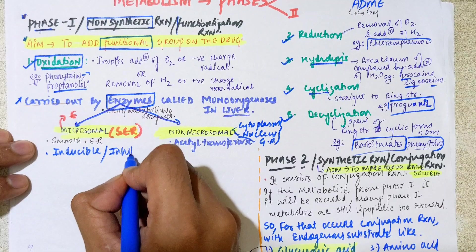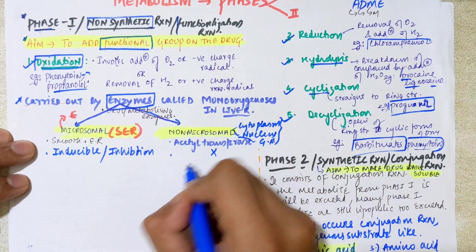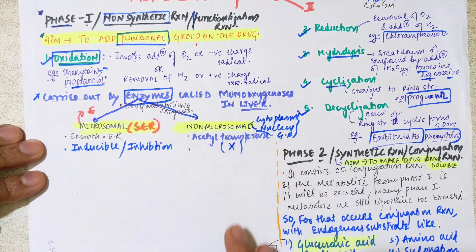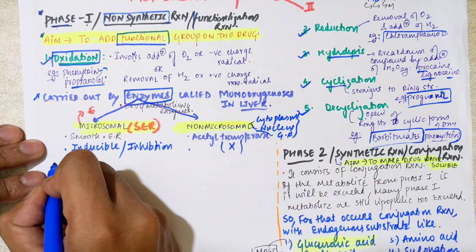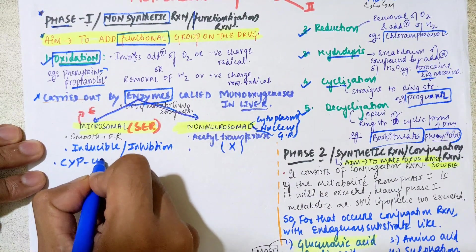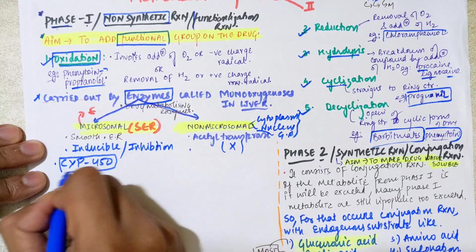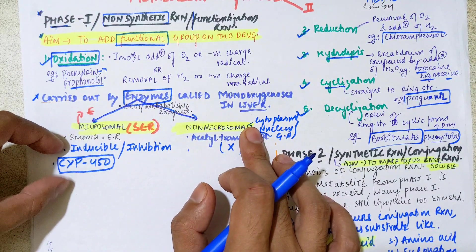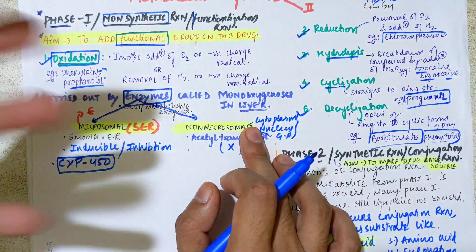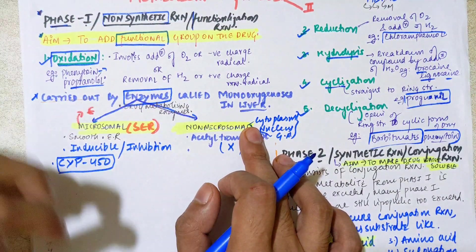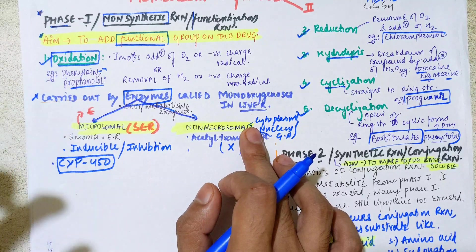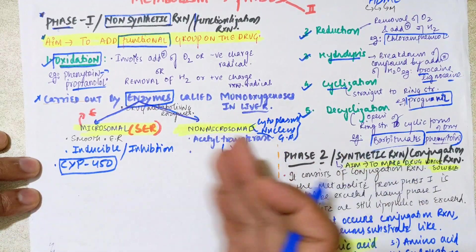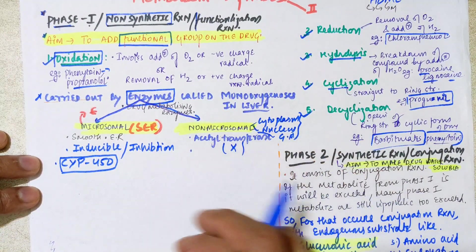The key point here is that microsomal enzymes are inducible and inhibition of their activity is possible, whereas this is not possible for non-microsomal enzymes. The most common microsomal enzyme is CYP450, by which most drugs are metabolized in the body — including endogenous substances like steroids and lipids, and exogenous substances like drugs, carcinogens, and environmental pollutants, all metabolized in the liver by this enzyme.